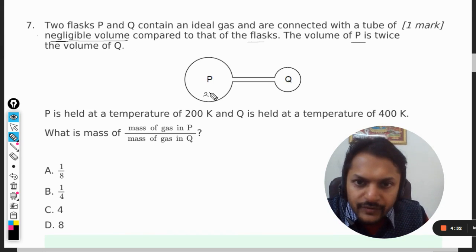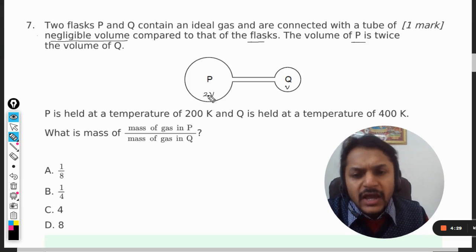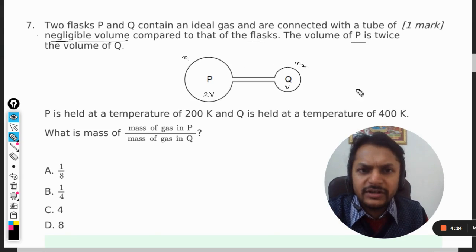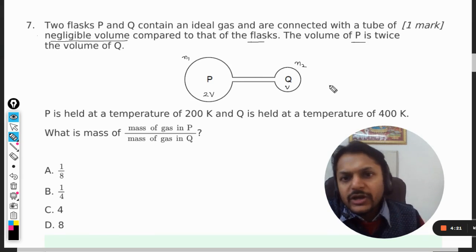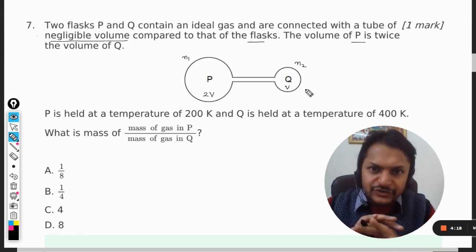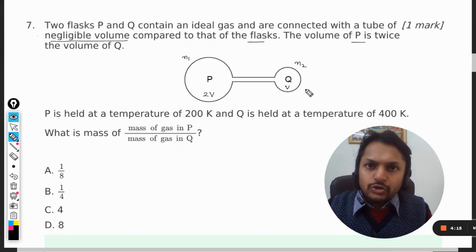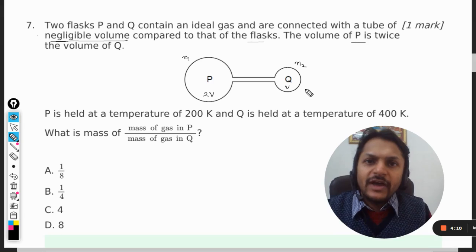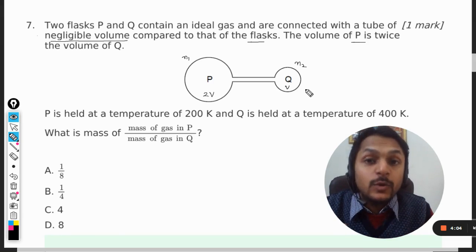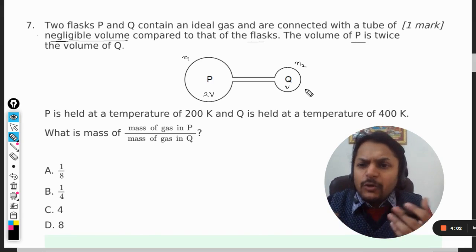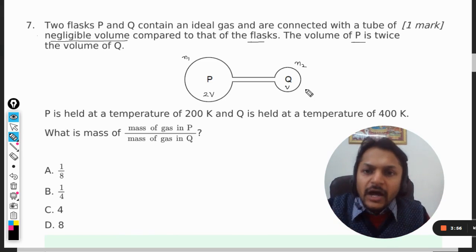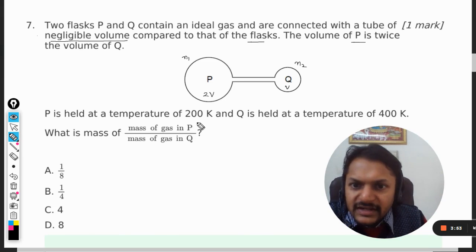This volume will be taken as 2V, here the volume is V. We can assume the number of moles here is n1 and here is n2. The gases will flow through the pipe into the two chambers and then settle down. When will they settle down? When the exchange of gas stops, when the pressure in the two chambers becomes equal to each other. So without even being told, we know that the pressure in both chambers has to be taken as the same.